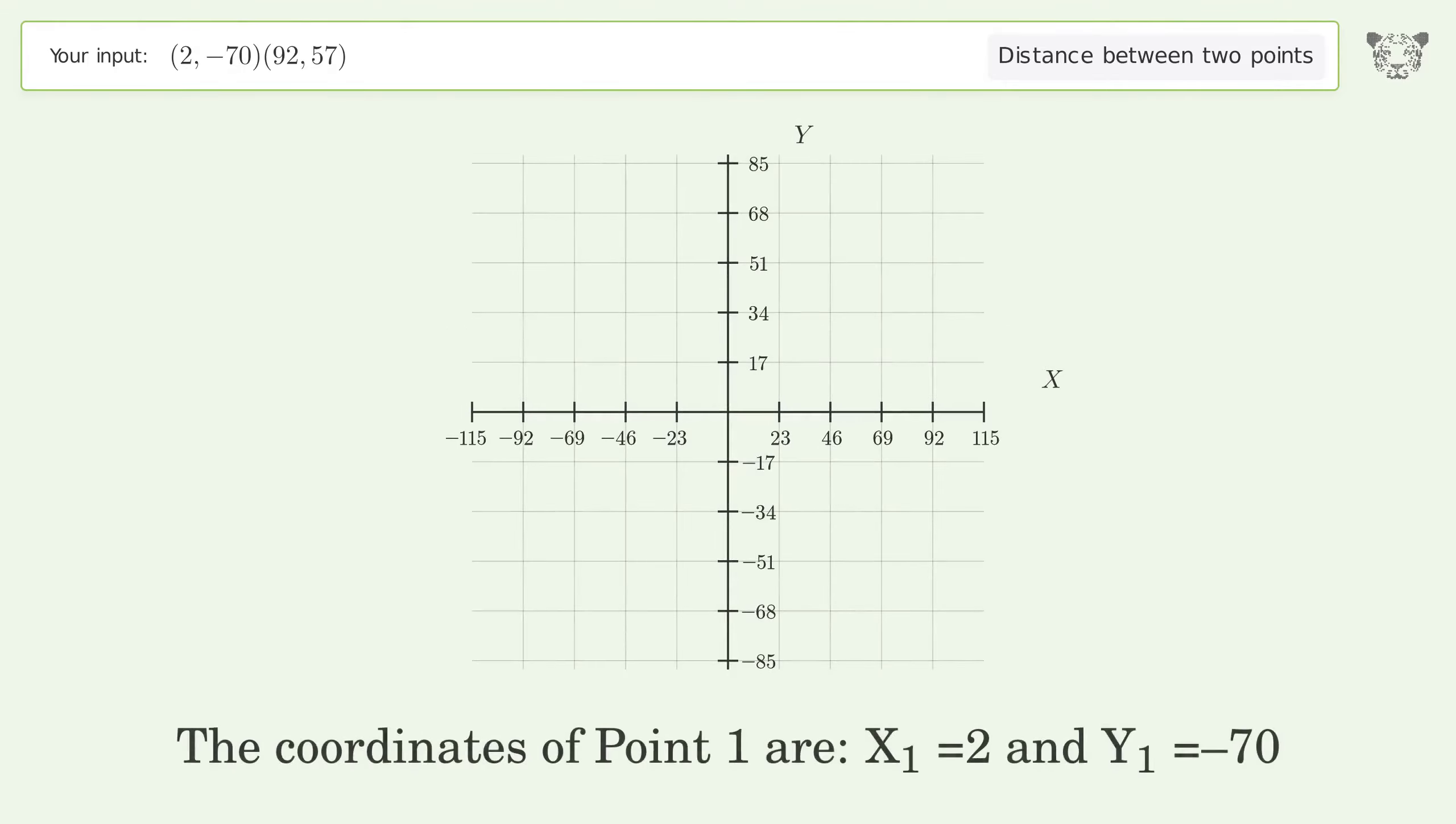The coordinates of Point 1 are x1 equals 2 and y1 equals negative 70. The coordinates of Point 2 are x2 equals 92 and y2 equals 57.